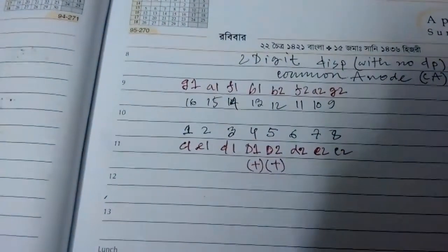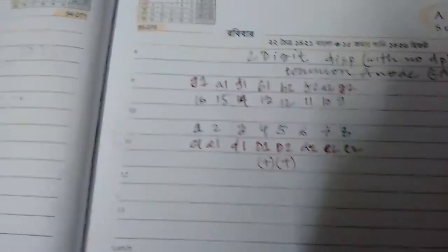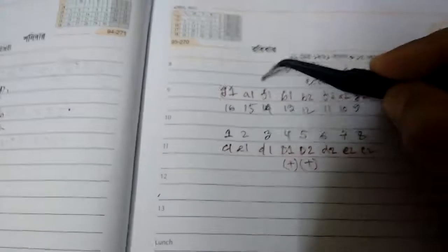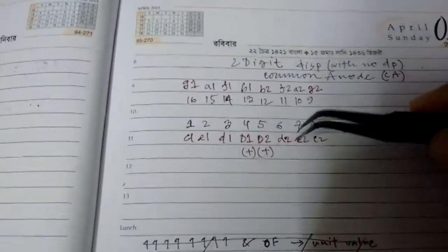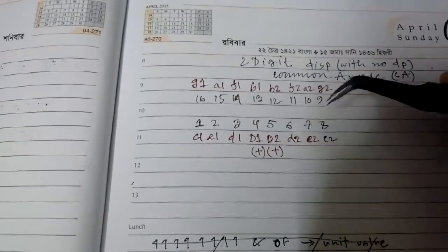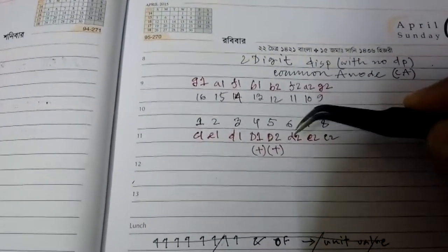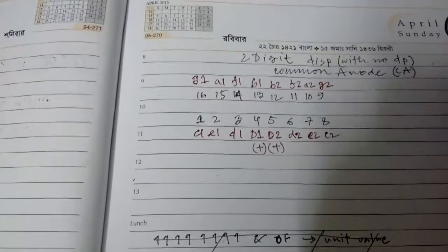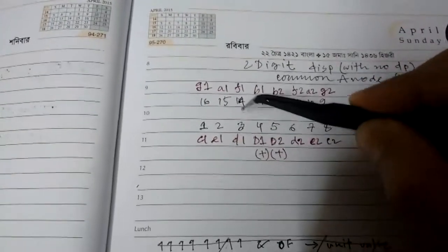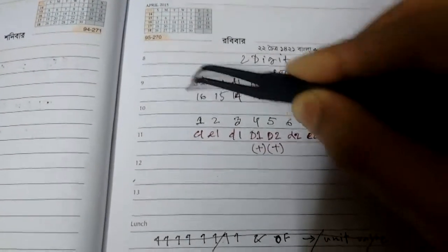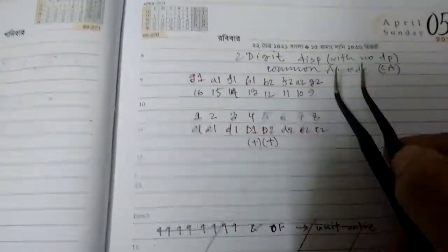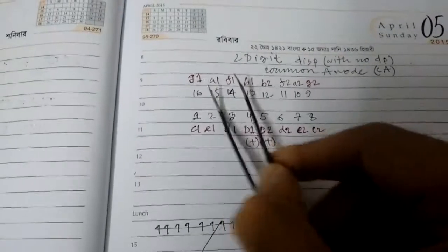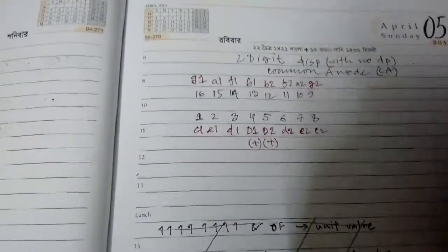So why would you do that? I don't know - if you decided to make a board that contains two digits, why won't you internally connect them? That would be easier. Anyway, they have brought out all the segments separately. This has a bit of symmetry if you can tell - G1 and here's G2, and A1 and here's A2, and so on.